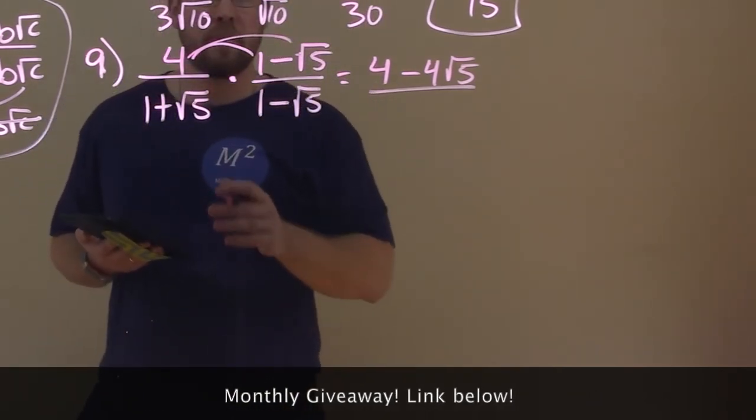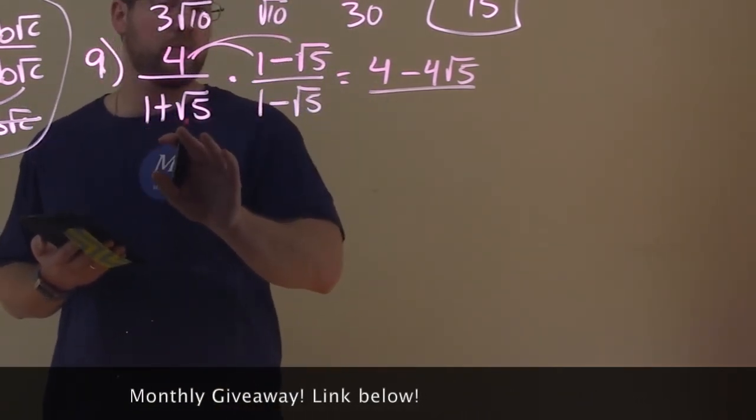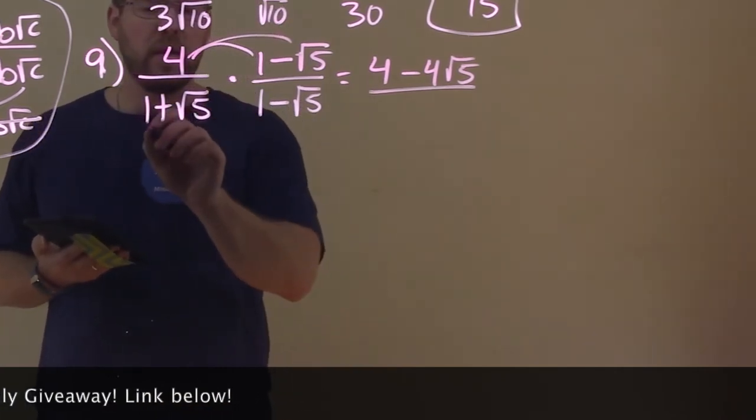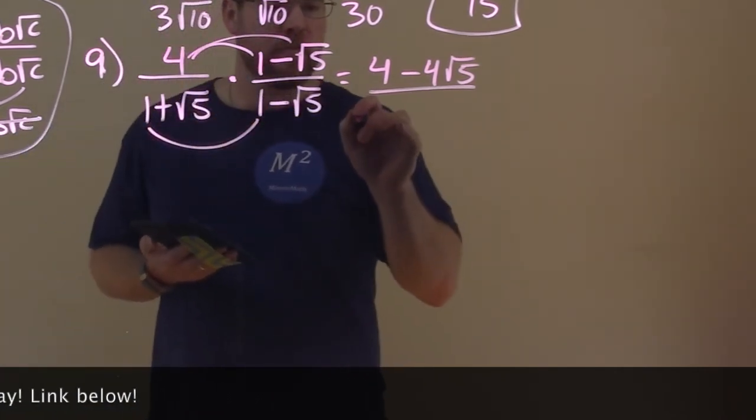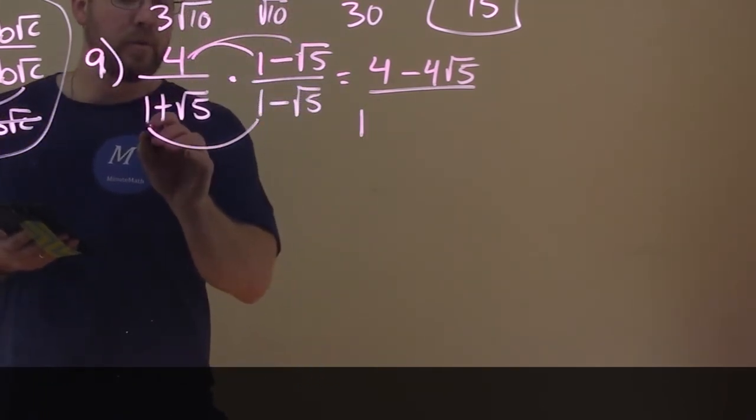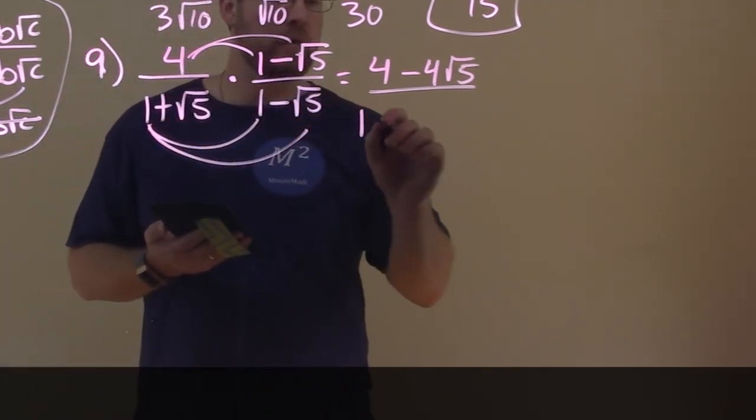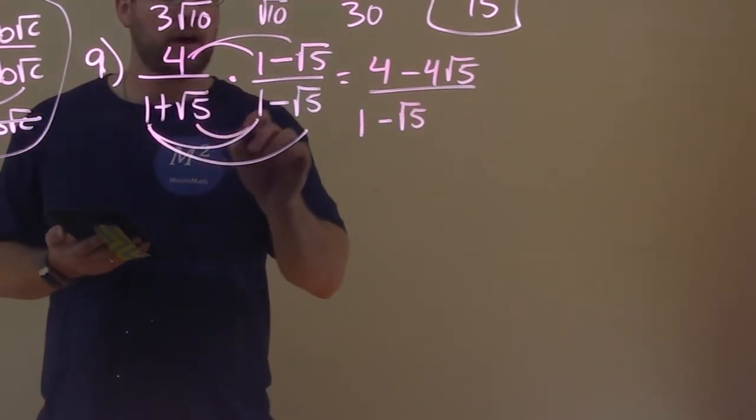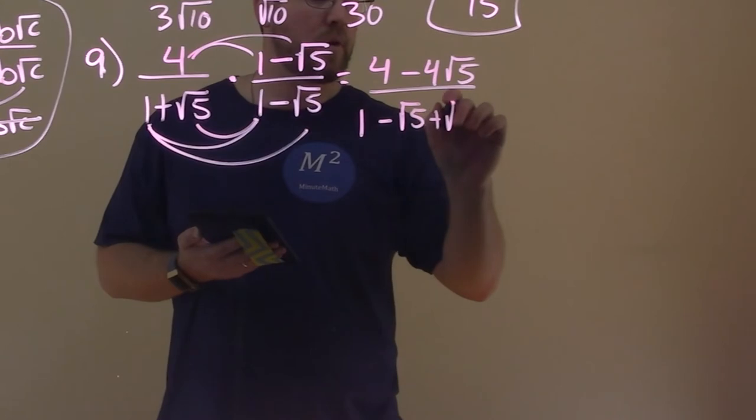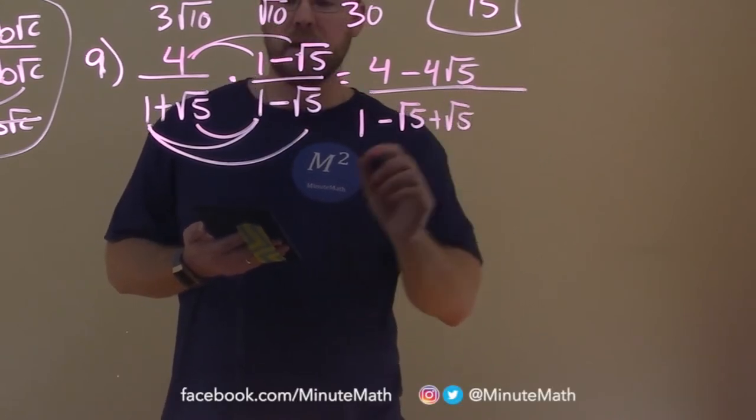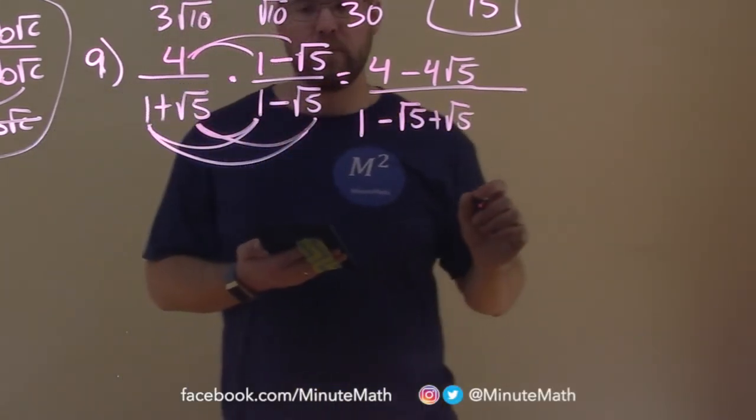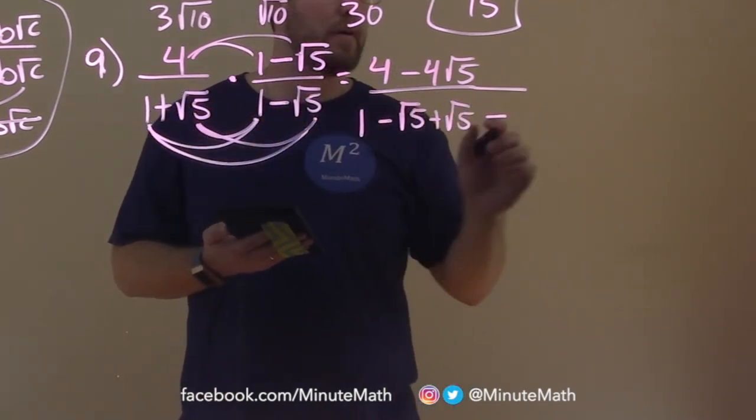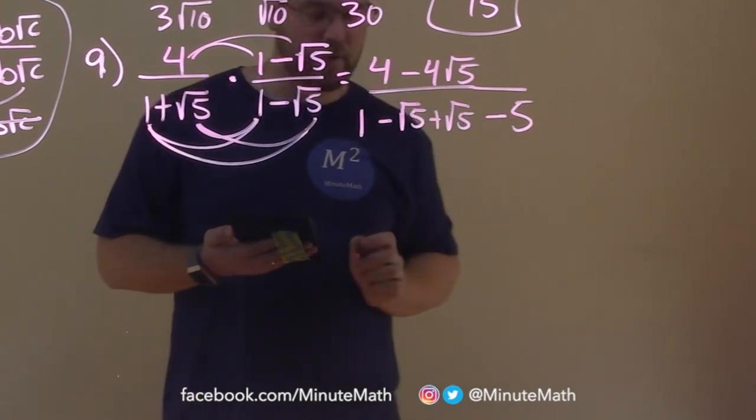Let's try the denominator. Remember, all parts of the first expression multiplied by all parts of the second expression in the denominator. 1 times 1 is just 1. And then let's go through it. 1 times a minus square root of 5 is a minus square root of 5. Square root of 5 times 1 is just a square root of 5. And lastly, square root of 5 times a minus square root of 5 is a minus, well, square root of 5 times square root of 5 is 5, so minus 5 here.